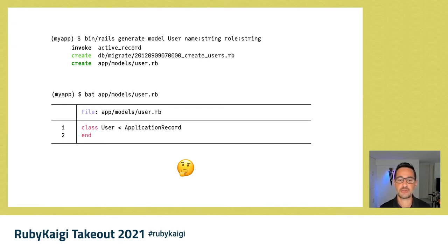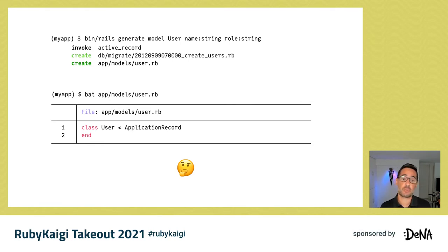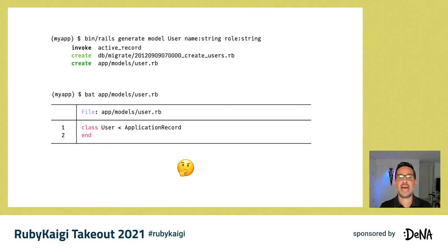That was not what I had expected. I thought something had gone wrong and the name and role fields I had specified had not been generated, since they were not in the user class definition. It took me a while to understand that Rails, or rather ActiveRecord, did things in a slightly different way to other ORMs. Where most ORMs would have static attributes — methods that map to your database columns — ActiveRecord actually discovers your database columns at runtime and generates the required attributes dynamically.